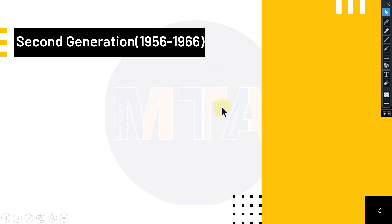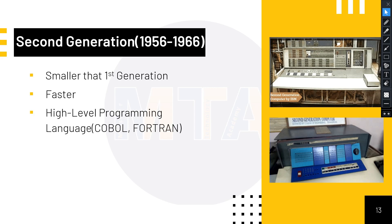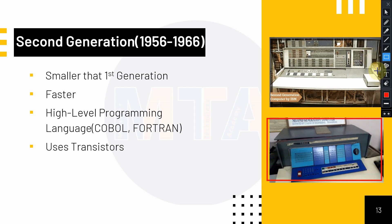The second generation of computers belongs to 1956 up to 1966. This generation of computer is smaller than the first generation and somewhat faster. They also used high-level programming languages called COBOL or FORTRAN — these were the first high-level programming languages available at that time. You can see examples of second generation computers here.